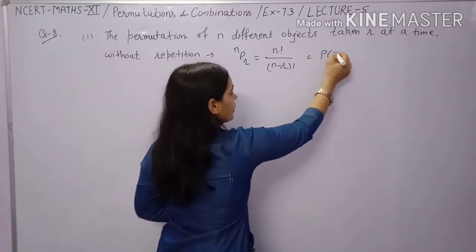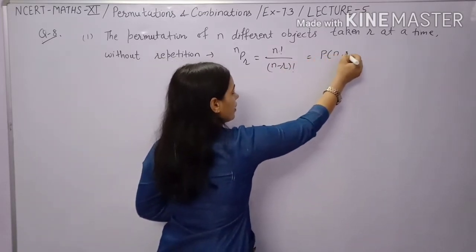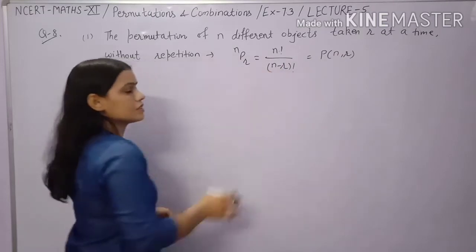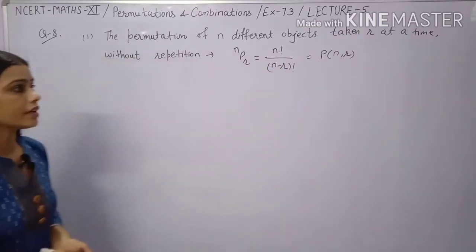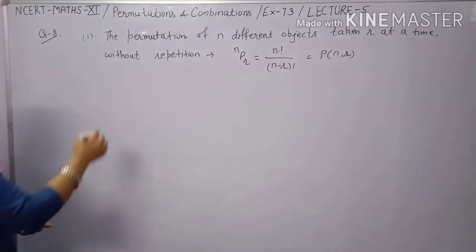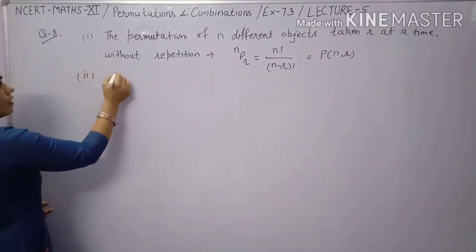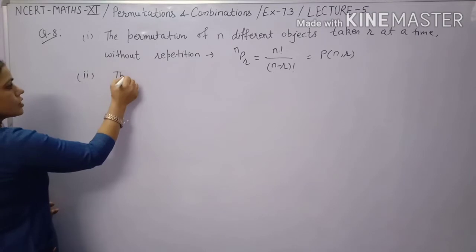For this, the permutation formula is: nPr = n! / (n - r)!. Both notations P(n,r) and nPr give the same value.